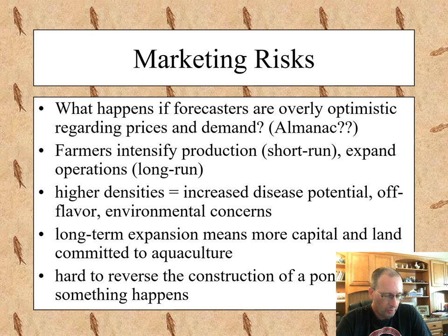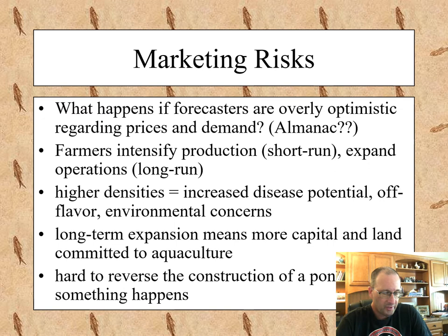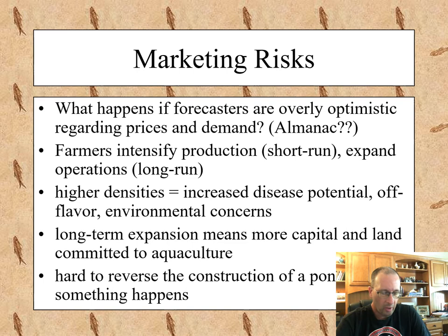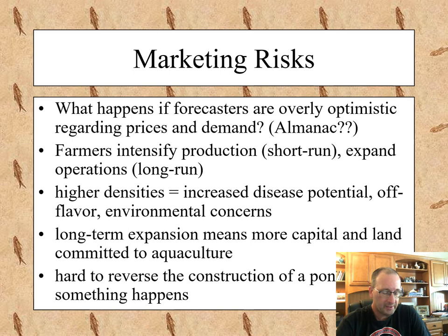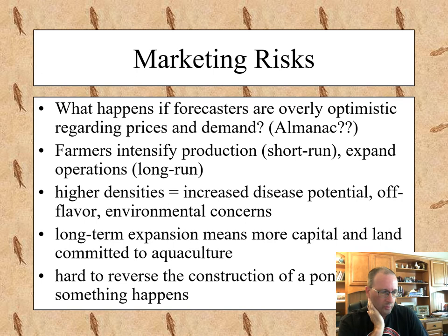Extreme weather conditions can also be a challenge — right now there's a drought and farmers have to pump water, and while the water doesn't cost anything, the electricity to move it certainly does. Maybe you get an opportunity to produce a hot fish quickly in a short run, then go back to standard production. Or maybe market forecasting looks really good and you decide to expand operations — that's a huge investment. Changes in densities or times of year you provide products all involve risk.